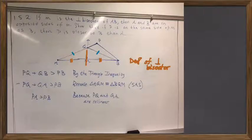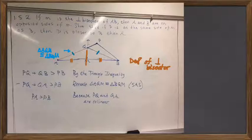Side-angle-side, which proved the congruency of which triangles? AQM and BQM were congruent. Right, so that was an important fact for this proof.